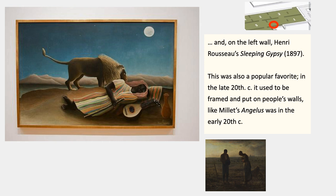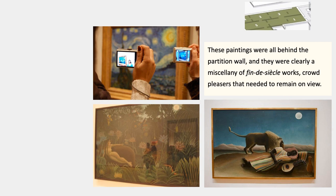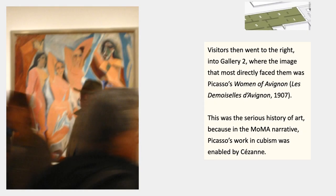On the left wall in the back of that same room was another Rousseau painting, The Sleeping Gypsy. It was also a popular favorite in the late 20th century — it used to be framed and put on people's walls, popular as a poster. It was a kind of late 20th-century equivalent of Millet's Angelus, which was very popular in color reproductions in the early 20th century — a bourgeois house ornament from MoMA's point of view, and something that they really could have done without because the narrative doesn't include it. These and a couple of others were all there behind the partition wall in the unnumbered gallery.